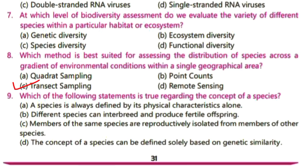Option C — members of the same species are reproductively isolated from members of other species — is the correct definition of a species: a group of organisms that can interbreed with each other and produce fertile offspring. Option D — the concept of a species can be defined solely based on genetic similarity — is not correct, because different species can have very similar genes but cannot interbreed.